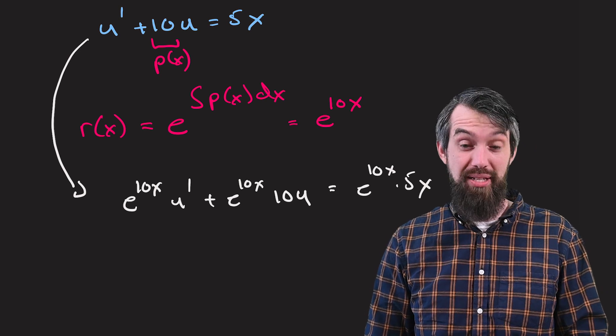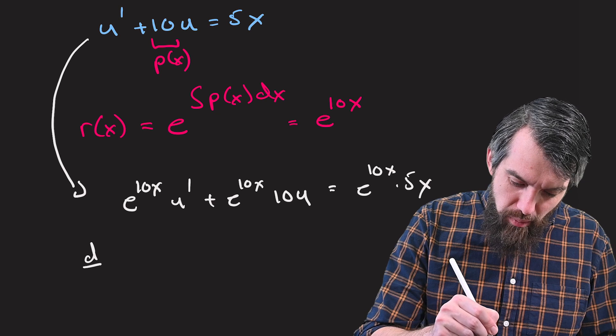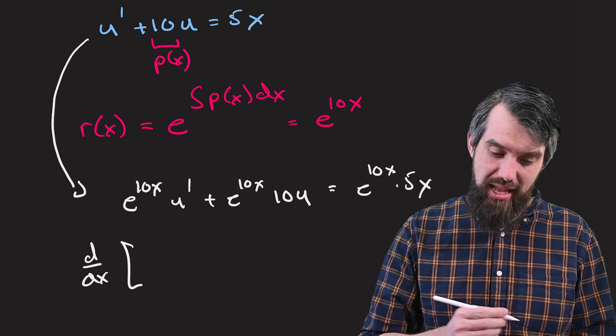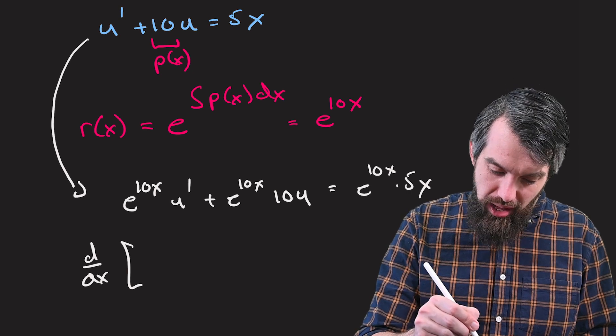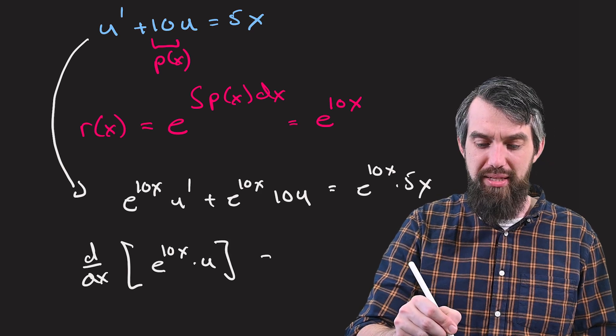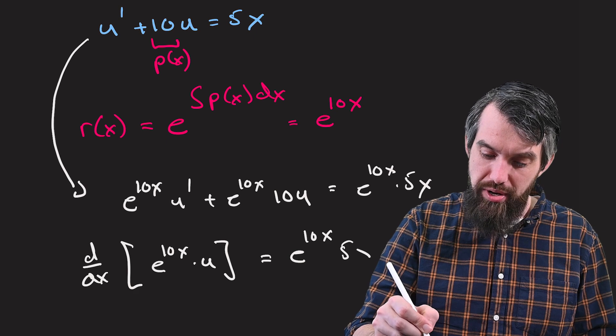Is equal to e to the 10x times 5x. And the one on the right-hand side is supposed to be an x. And then we use the standard trick that we can do every time when we're doing the method of integrating factors, which is I can rewrite this left-hand side as the integral of e to the 10x, the integrating factor, and then just multiplied by u. And by product rule, that's the same thing. And on the left, nothing changes, so I'll just copy that down one more time.